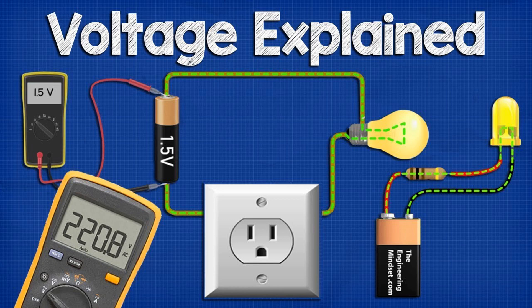An AC waveform, also known as an alternating current waveform, is a graphical representation of the variation of voltage or current over time in an alternating current, AC, electrical circuit. The AC waveform shows how the polarity and magnitude of the voltage or current change as it alternates between positive and negative values in a regular and repeating pattern. The most common type of AC waveform is the sinusoidal waveform, often referred to as a sine wave, which is a smooth and symmetrical curve that resembles the shape of a sine function from trigonometry.